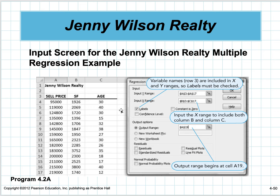I'm looking at square footage and age first. When I go to data analysis, I enter A3 through A17 for my y values, and B3 to C17 for my x values—that's square footage and age. The output range is going to put it on the same worksheet beginning at A19.